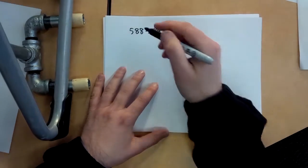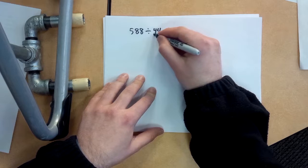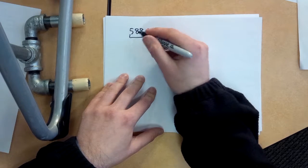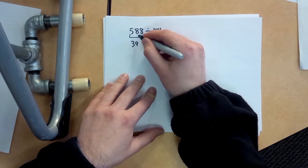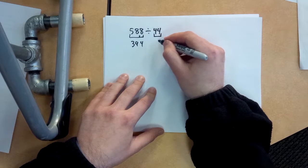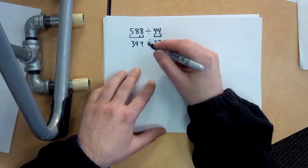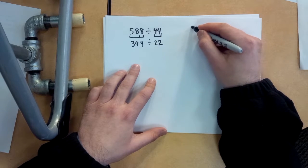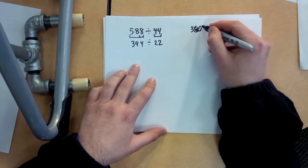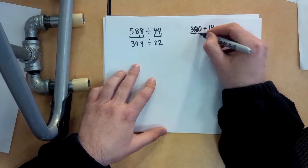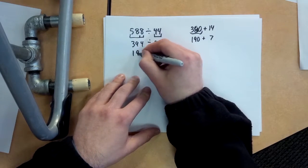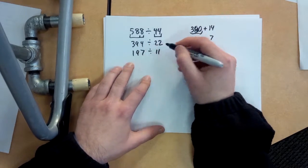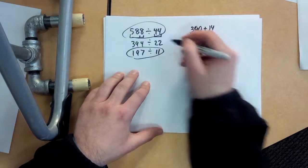Here we go. 588 and 44. Again, I didn't rehearse these. I hope they work out. I know they're even numbers, so I can cut them in half here. 588 divided by 2 is going to be 294, and that's going to be 22. Oh, 294. What's that going to be? That's going to be 380 plus 14. So that'll be 190 plus 7. So 197 divided by 11. So this one didn't cut down too far, but I'd rather deal with this than this one here.